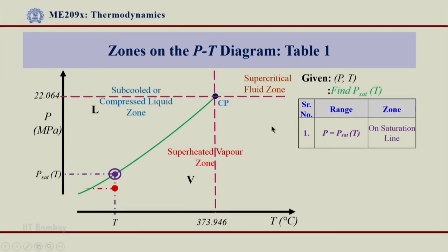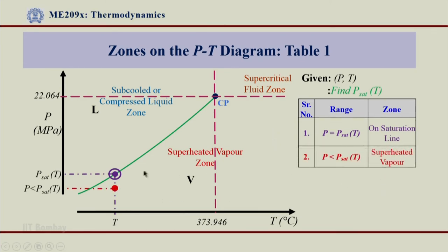The next case is if P is less than Psat(T). If the given pressure P is less than Psat(T), this state lies in the superheated vapor zone. Correspondingly, we can say that this case represents a superheated vapor zone.